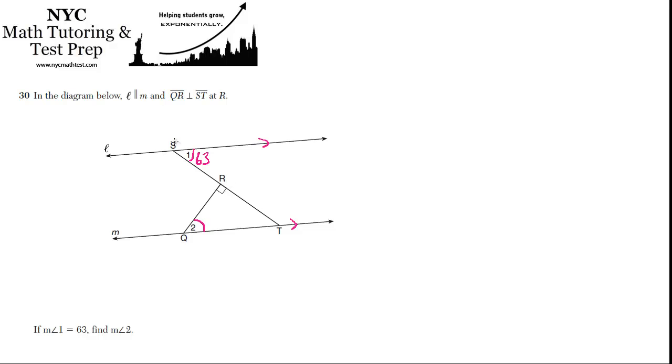When two parallel lines are cut by a transversal, alternate interior angles are congruent. So 1 is an alternate interior angle with this angle, right? So this must be 63.